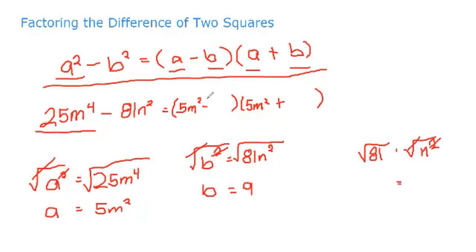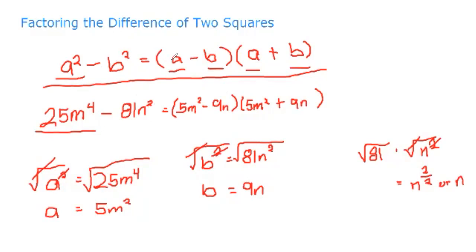When we make it a fraction, we get n raised to 2 over 2, which equals n raised to 1, or simply n. So b equals 9n. Therefore the factors are 5m squared minus 9n and 5m squared plus 9n. This is the factored form of 25m raised to 4 minus 81n squared.